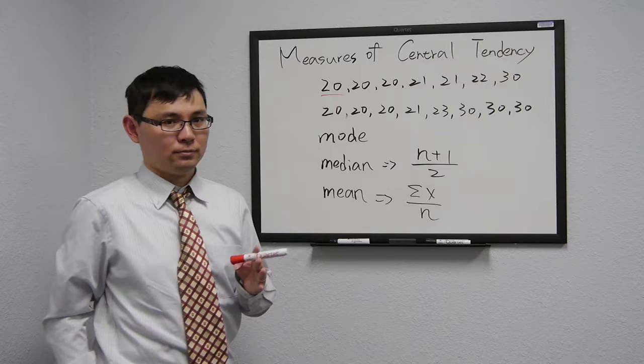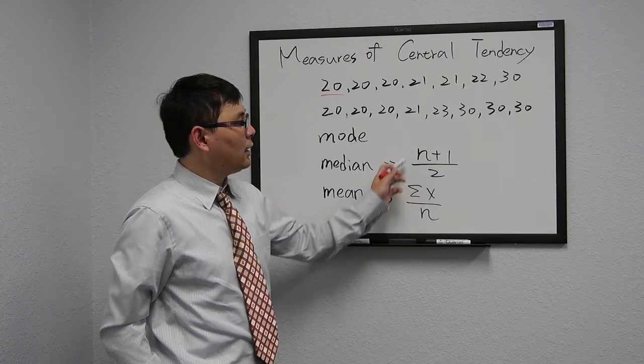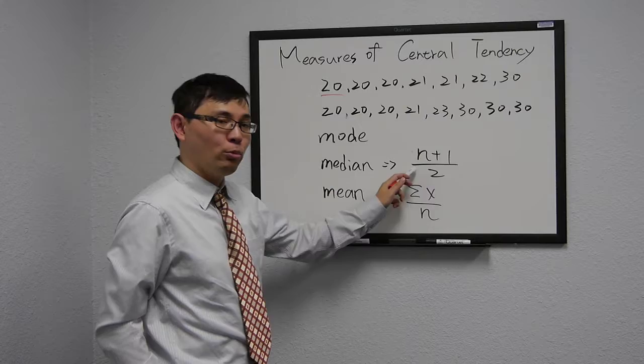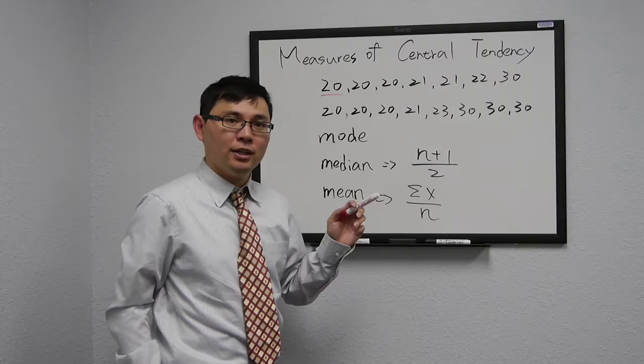you can use the formula to find the position of median. The formula is the position of median equals n plus 1 divided by 2, where n is the number of cases. Remember, this formula is only for the position of median, not median itself.